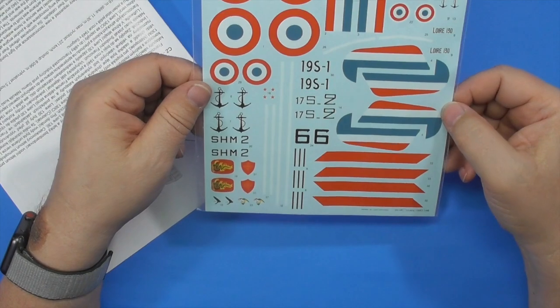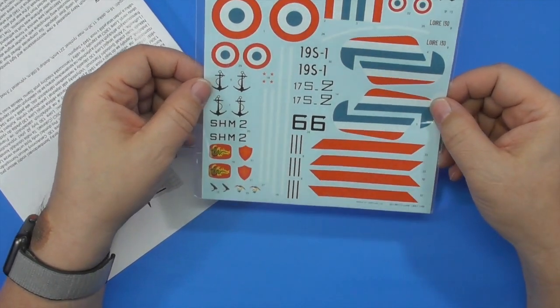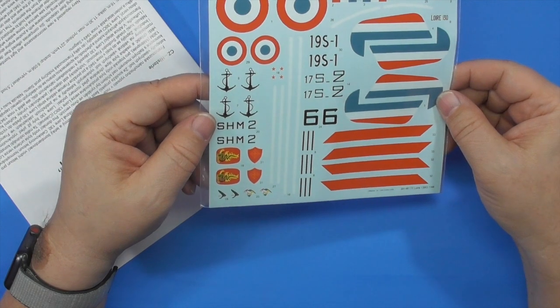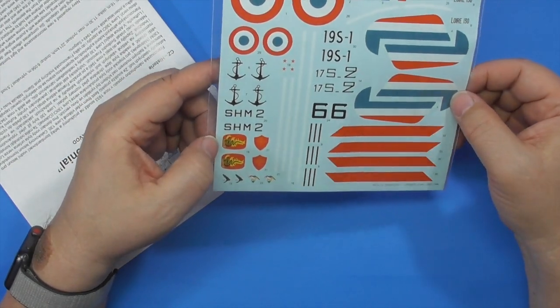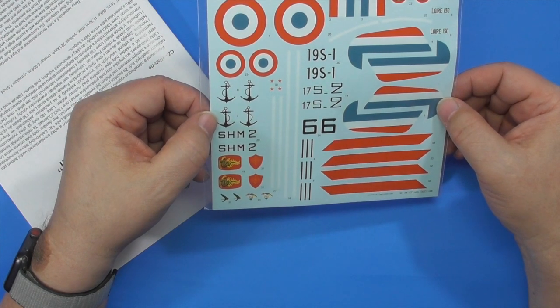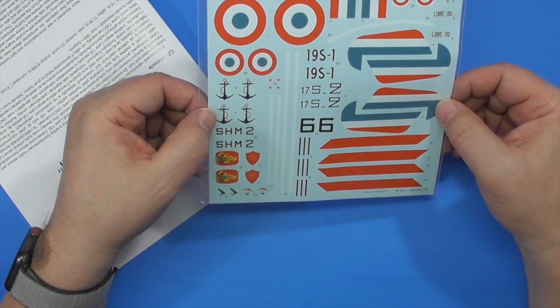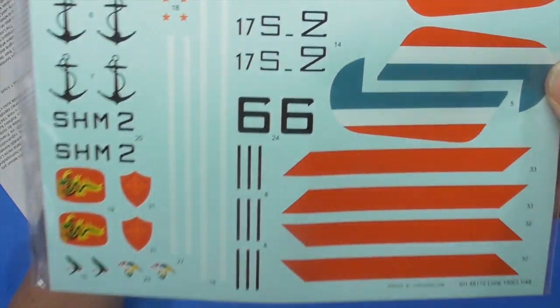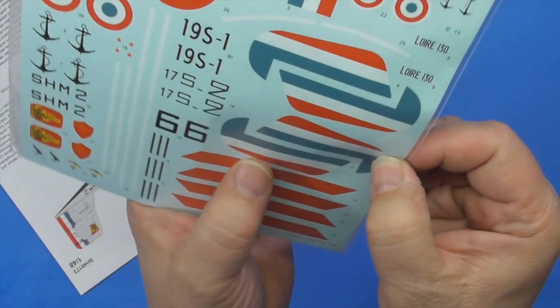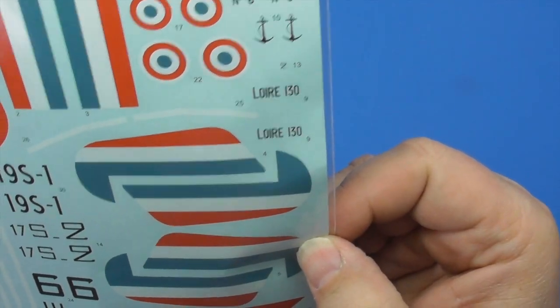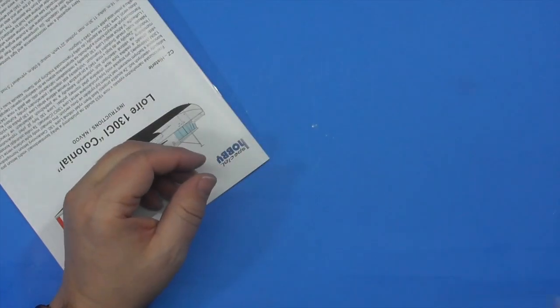Decals. In register. Another nice soft bag. Printed by Cartograph. Don't need to see any more. I like the dragon on there. Is that Argentina? Is that who's got the anchor for their navy? I think so. But they're not overly thick. They're made by Cartograph as I said. No more needs to be said about that.